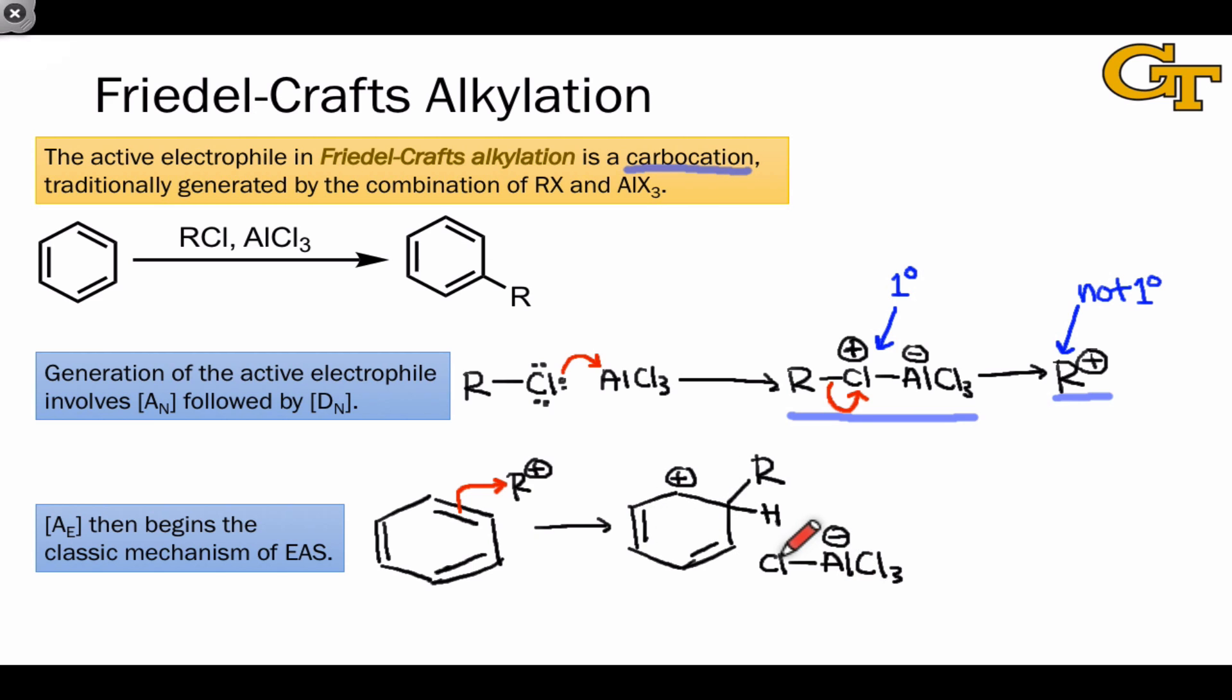From here, a Bronsted base can remove this proton to restore aromaticity and give the final product. The best Bronsted base in this case is the AlCl4- anion, just as we saw in halogenations. Transfer of a proton to chlorine in this intermediate restores aromaticity and generates HCl and AlCl3, showing that AlCl3 can be used in catalytic quantities in this reaction.